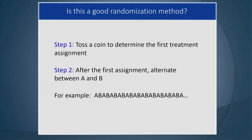Is this a good randomization method? You toss a coin to determine the first treatment assignment, and then you alternate between A and B for the rest of the trial. No, it is not. Why not? Because if at any point during the trial one participant's assignment is known, all subsequent ones are going to be known and predicted, and you don't want that.